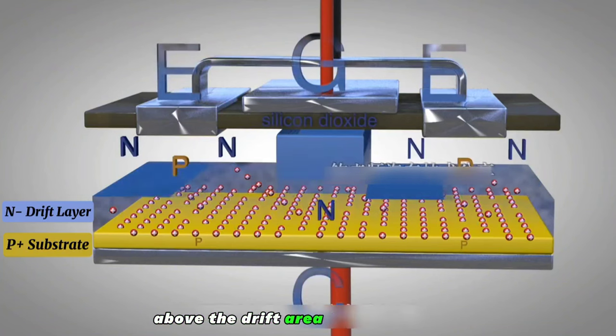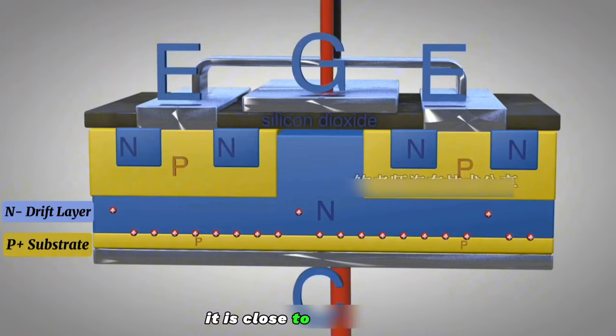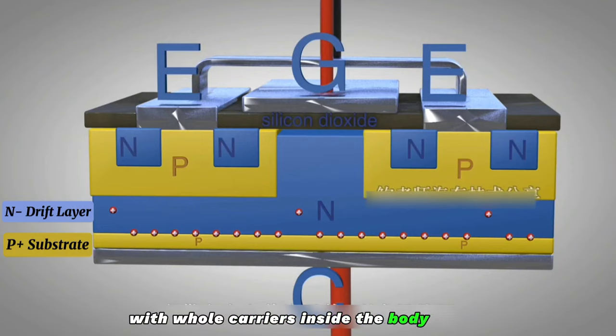Above the drift area is the body area consisting of P-type semiconductor composition. It is close to the emitter. There is an N-type semiconductor layer with hole carriers inside the body region.